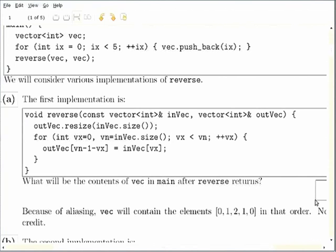But in the first case both of them have aliasing problems. The first implementation has invec and outvec and reverse assumes that there are different vectors. But main doesn't satisfy that contract. Main actually passes references to vec, the same vector as the two arguments. And that results in a bit of a problem.